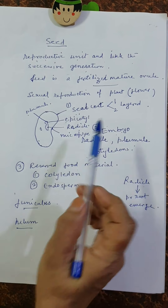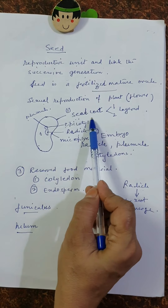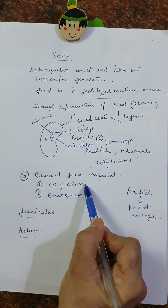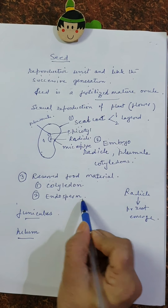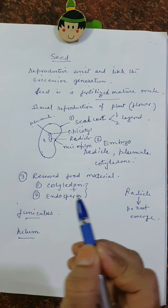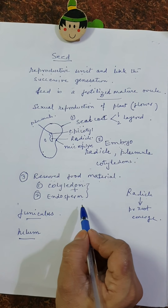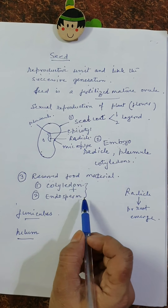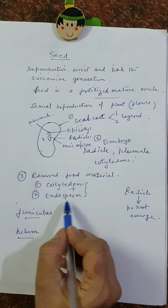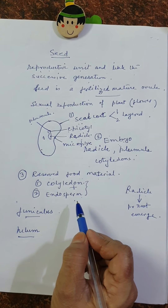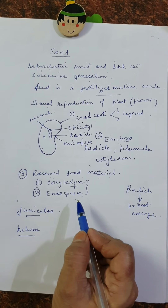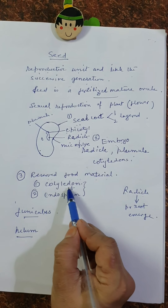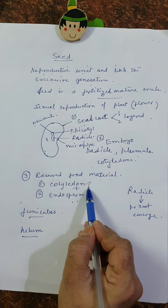Reserve food material is the third part of the seed. It may be only in the cotyledons in some seeds, or only endosperm in others, and in some seeds both are found. In many plants, a separate part for storage of starch develops, called the endosperm. Cotyledon is also a reserve food material.